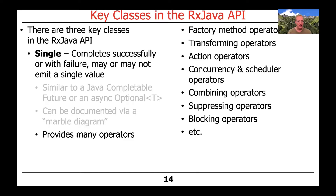There are many operations provided by Singles: factory method operations, transforming operations, action operations, concurrency and scheduler operations, combining operations, suppressing operations, and blocking operations, as well as others. Many of these operations are very similar to what you see in Project Reactor, though by no means all. That's something else we'll be covering in this course — the differences between RxJava and Project Reactor — because there are some, and it's very important to understand those distinctions.